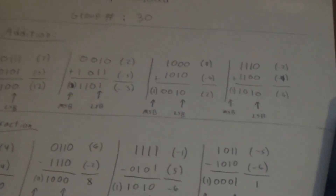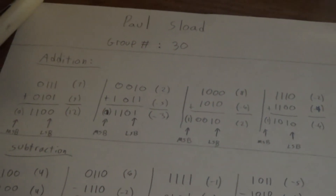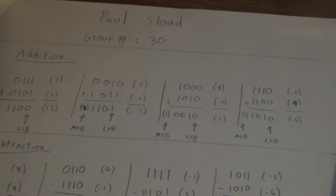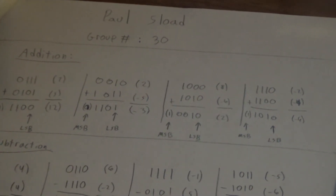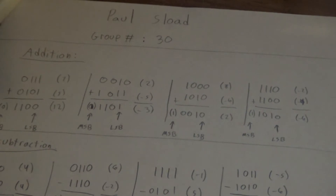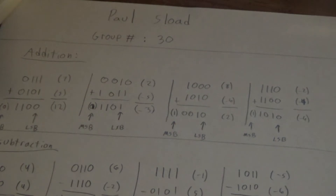These right here are the test cases for the adder and subtractor. In terms of addition, we have the decimal numbers seven and five being added to give us twelve, two and negative five to give us negative three, eight and negative six to give us two, and negative two and negative four to give us negative six.